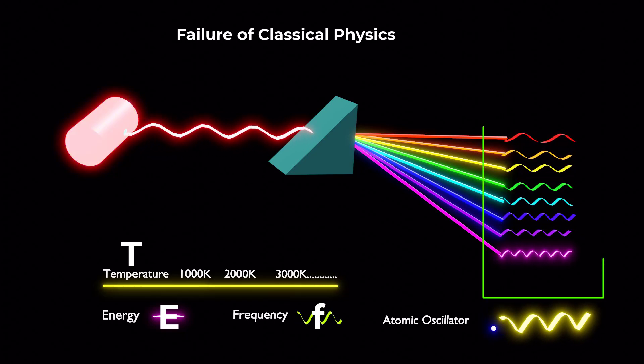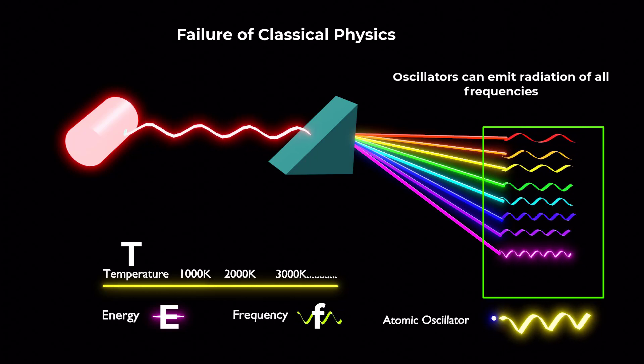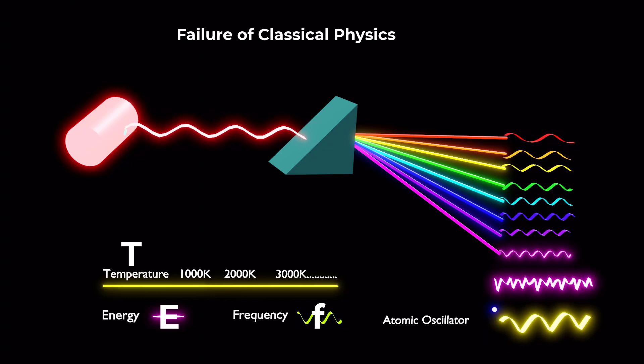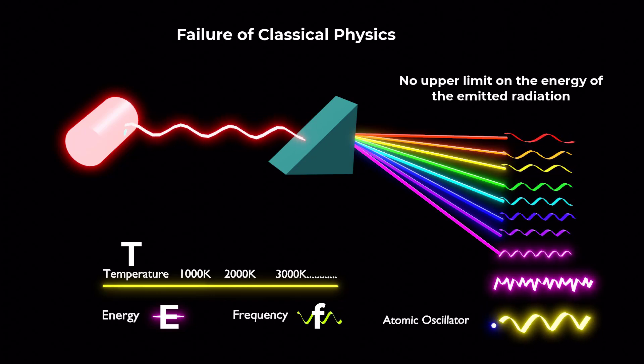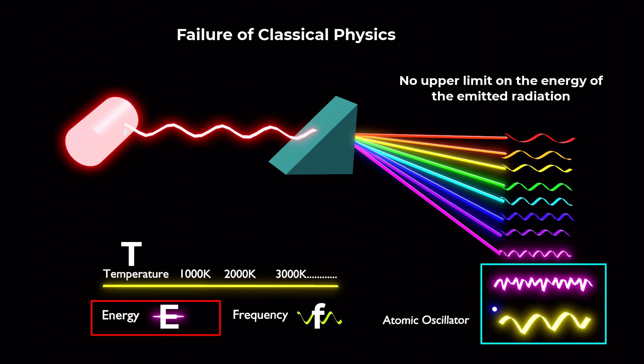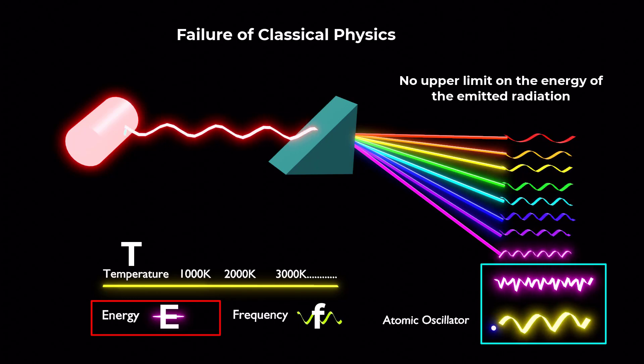Therefore, all frequencies and energies of the emitted wavelengths were considered possible, allowing them to take any value, leading to the prediction of no upper limit on the energy or intensity of light produced by oscillators vibrating at high frequencies or shorter wavelengths.